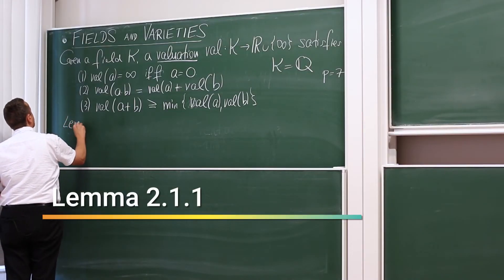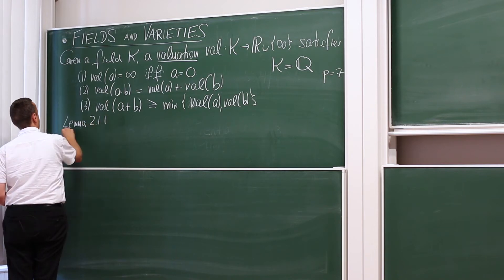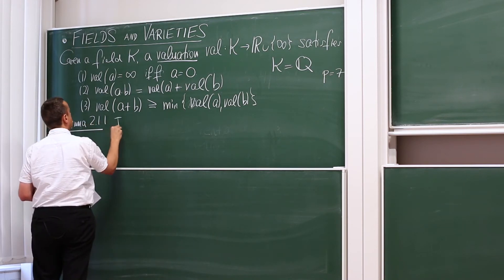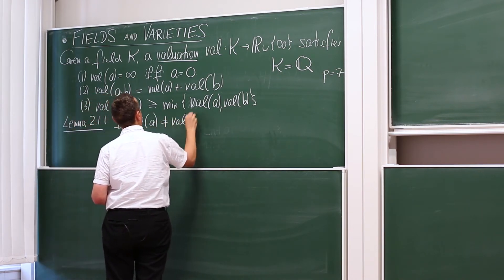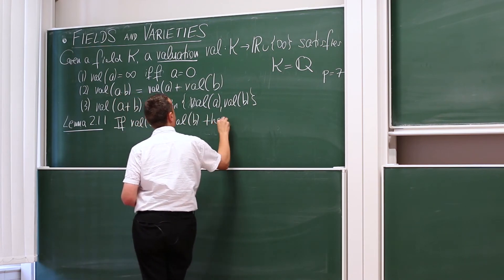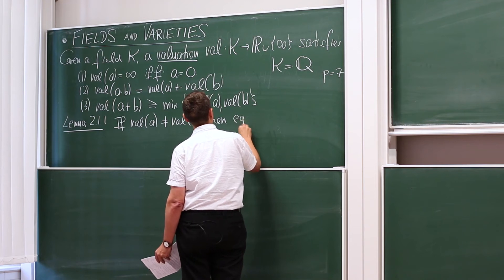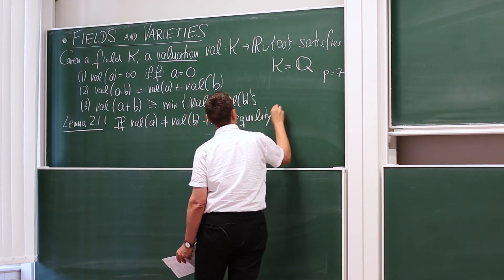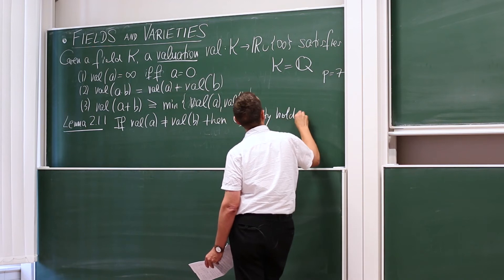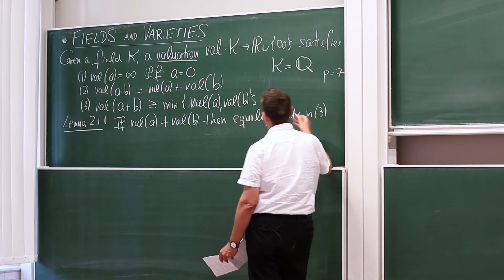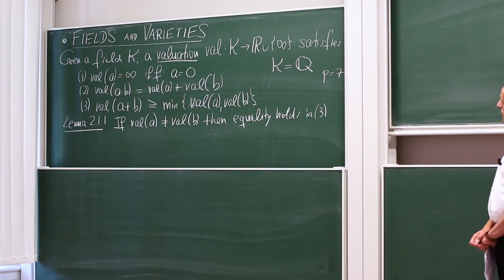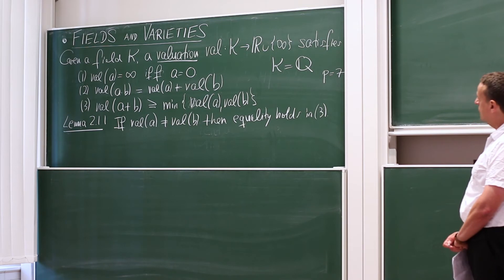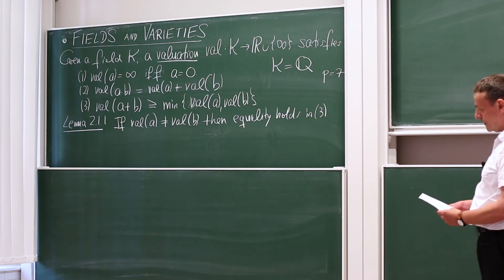Now, here is a basic fact that follows from these axioms. Lemma 2.1.1 says if the valuation of A is different from the valuation of B, then we actually have equality holds in the third situation. So then equality holds in 3. If A and B are different valuation, then the valuation of A plus B is equal to the minimum. So the only way there could be a drop, a strict inequality, if there is some kind of cancellation that arises if A and B have the same valuation.